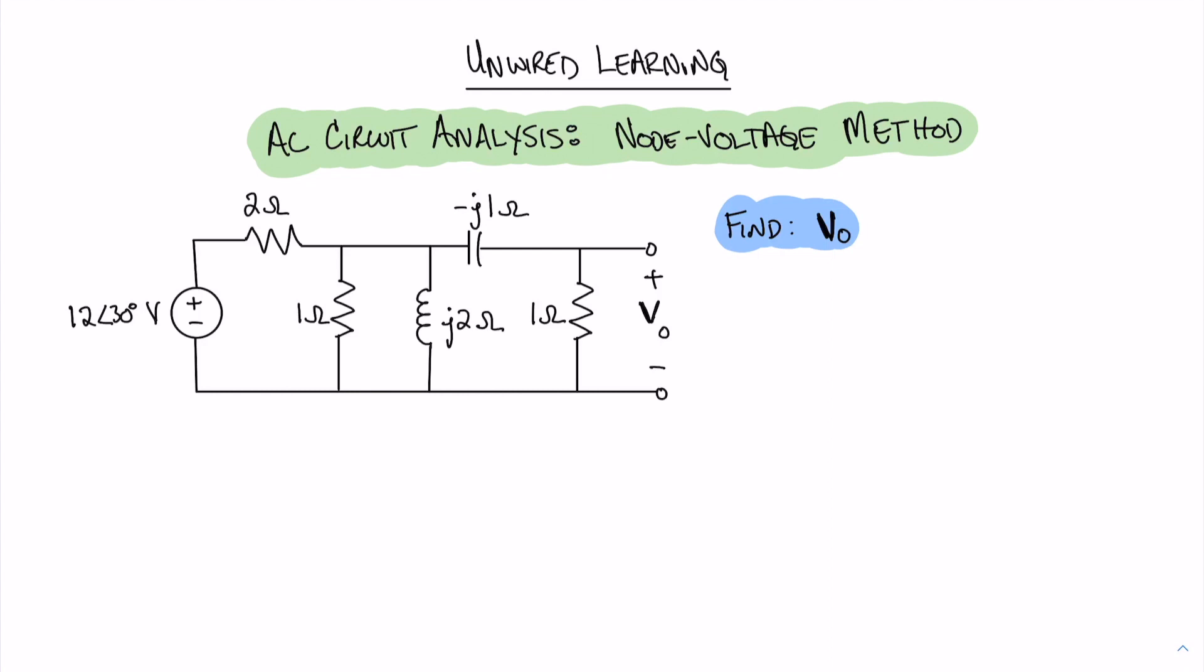For this particular problem, what I want us to recognize is that we have a node here between the resistor and the capacitor and with the parallel resistor and inductor. And of course, we have our output node, which we do need to write an equation for in order to have enough equations to simplify and solve for the voltage out.